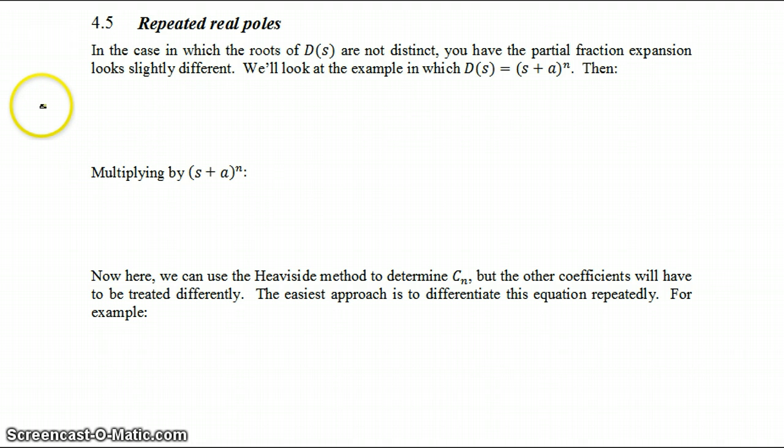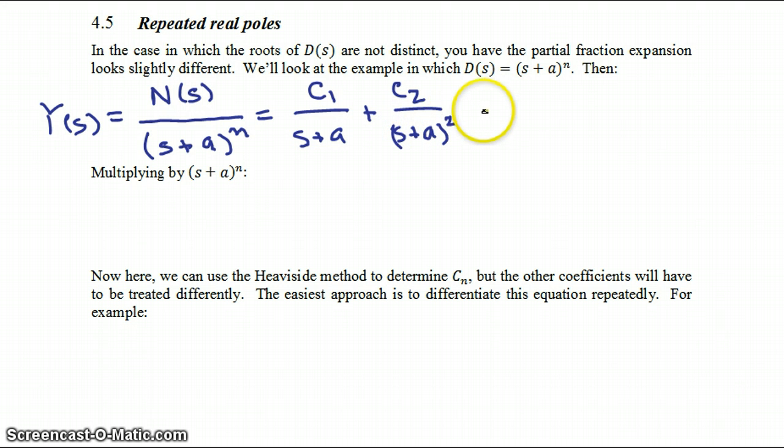So in that case we have Y(s) equal to some numerator, which is a function of s, divided by s plus a to the power n. Then our partial fraction expansion is going to be some coefficient c1 over s plus a to the first power, c2 over s plus a to the second power, plus dot dot dot, cn over s plus a to the nth power.